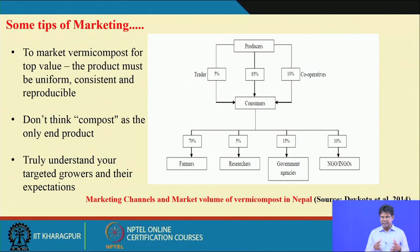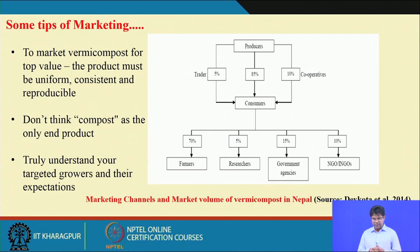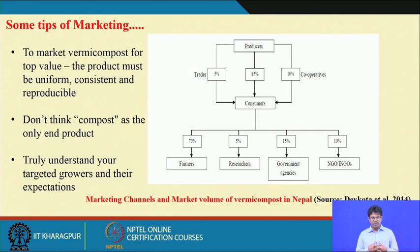Enriched vermicompost has higher nutritional quality than conventional vermicompost. For marketing, to achieve top value the product must be uniform, consistent, and reproducible so that consumers and farmers build trust through regular supply of consistent quality — this is a basic principle of any market. If you meet demand with consistent supply and reproducible quality, there will be sustained demand.